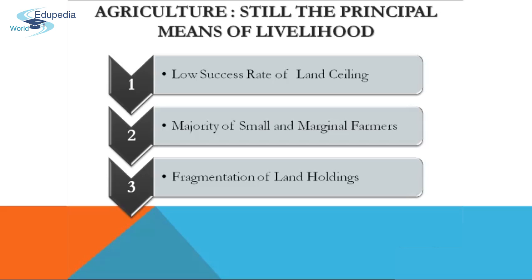Since independence, the government has opted to redistribute land through land ceiling. Land ceiling refers to fixing a specified limit of land that could be owned by an individual. Beyond that limit, all excess land would be taken over by the government and allotted to landless cultivators and small farmers. However, this move was successful only to a limited extent, because the poorest agricultural workers were unable to farm small holdings due to lack of money or skills, and holdings were too small to be viable.